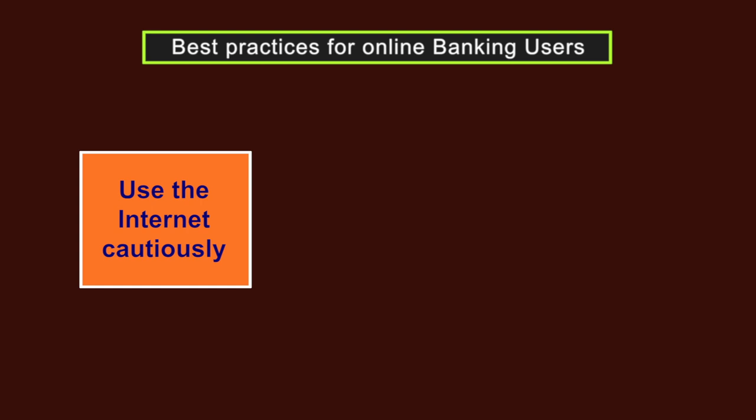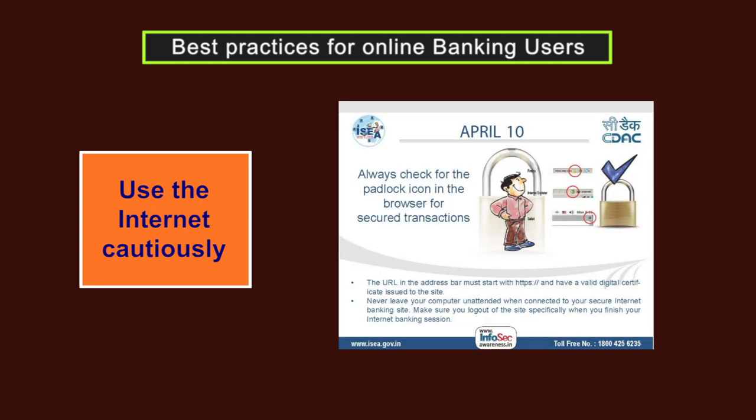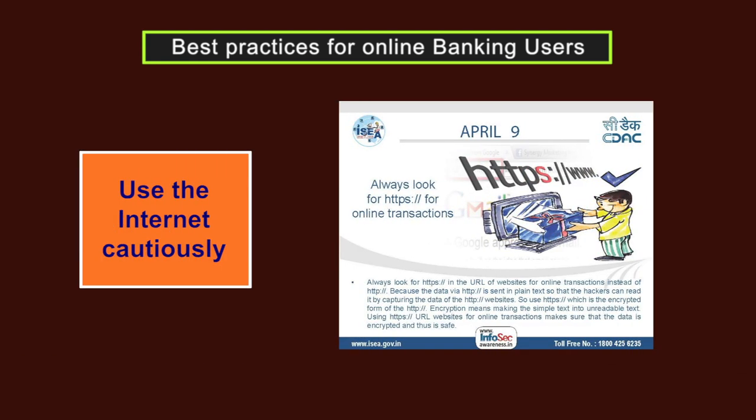The third important concern is to use the internet cautiously, and this can be done by following these suggestions. Always access online banking only by typing the URL in the address bar of your browser. Never attempt to access online banking through an external link of unknown or suspicious origin appearing on other websites, search engines or emails. Before logging in, check for the bank's security certificate details and the various signs like green address line, padlock, https, etc., that confirm you are visiting the secure pages of the bank.